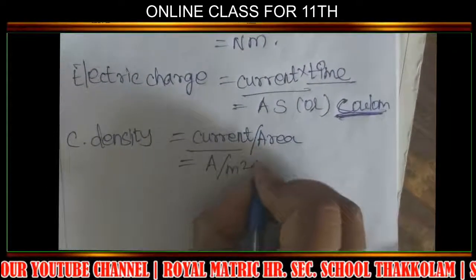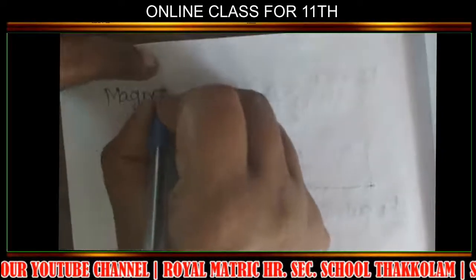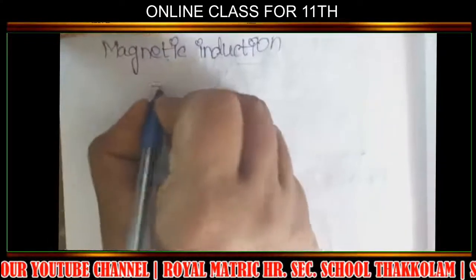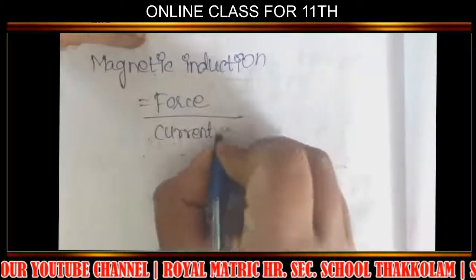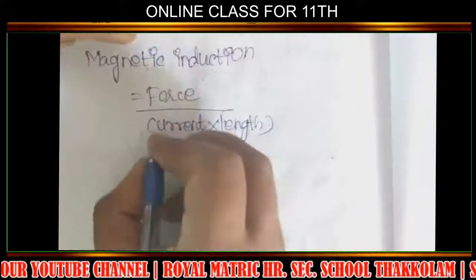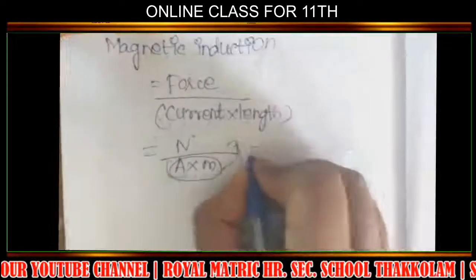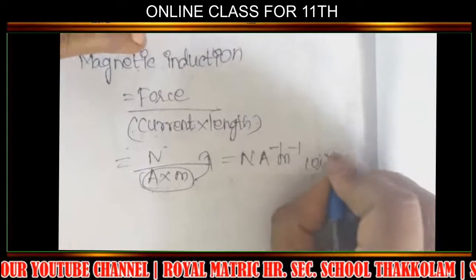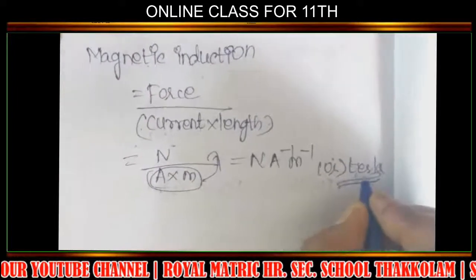Magnetic Induction formula is force divided by current into length. Force is Newton, current is Ampere, length is meter. So SI unit is N A⁻¹ m⁻¹, also called Tesla, named after Nikola Tesla.